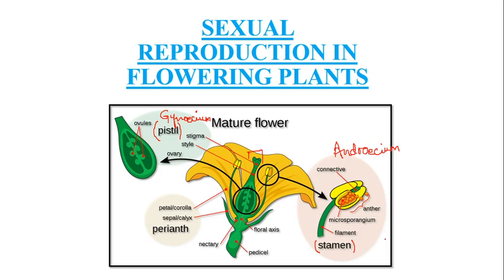Today we would be discussing only about the male reproductive part. It has a filament which consists of anthers on its tip, and the anthers consist of pollen grains inside them, or the microsporangia which develop into the pollen grains further. These are the other morphological features of the flower which consist of petal, sepal, which are part of perianth, and the pedicle, nectary, and floral axis — these are all the morphological physical features of the plant.